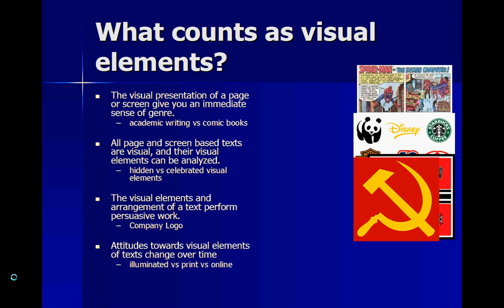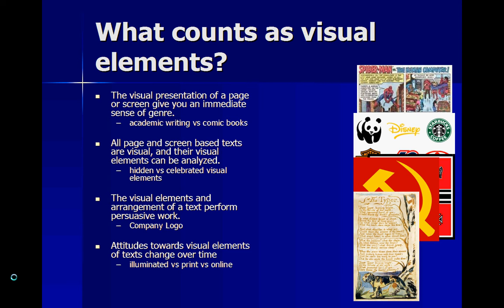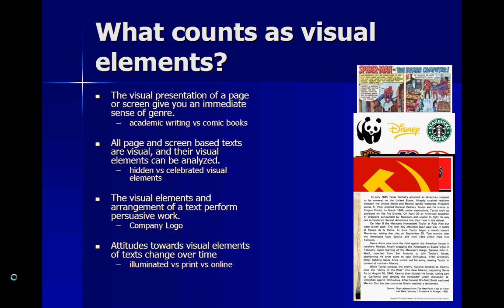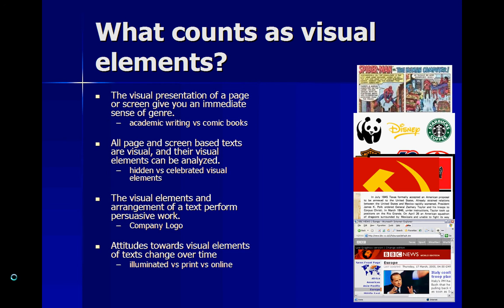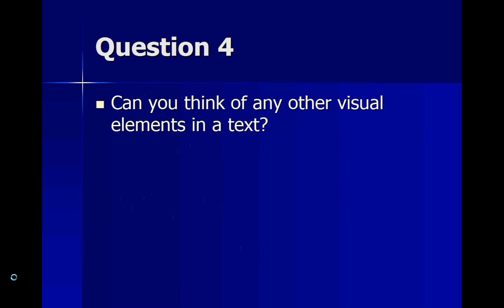The author says that attitudes towards visual elements of text can change over time. The example used is illuminated printing versus traditional printing versus online printing. In the 18th and 19th centuries, there was a preference for illuminated printing, such as William Blake's Songs of Innocence and of Experience. Later, preference shifted to more straightforward texts for mass distribution, and now there is a preference for online texts. Can you think of any other visual elements in a text? Answer below in the comments.